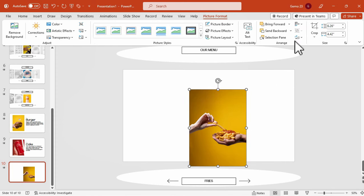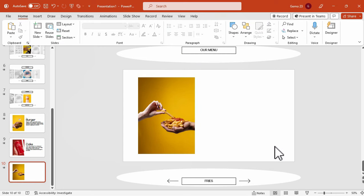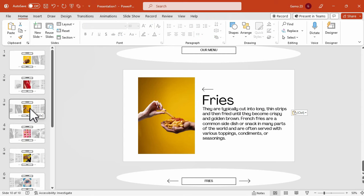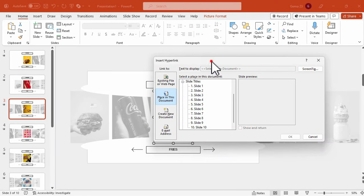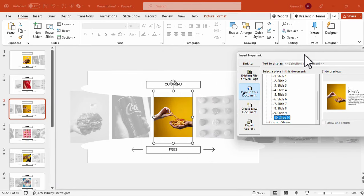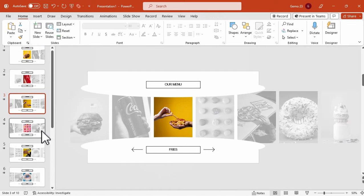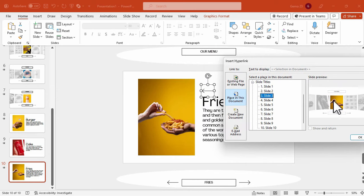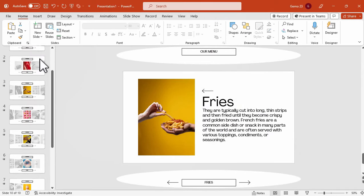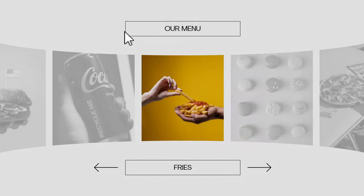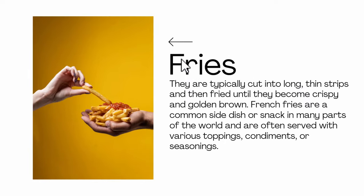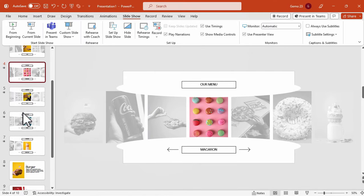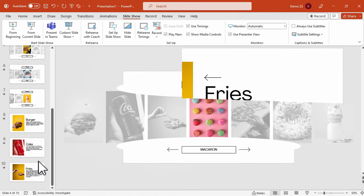Now just repeat the process of adjusting the images by adding the text and the arrow icon. Go back to slide 3 which contains the original photo, and apply the hyperlink function to slide 10 which contains the information about the fries. Then go back to slide 10 and add a hyperlink function to go back to slide 3 where the fries photo is originally located. You can just repeat this process until you reach the last image.